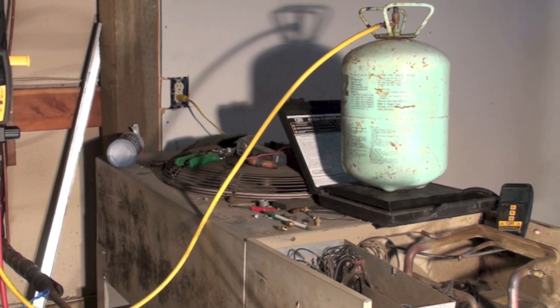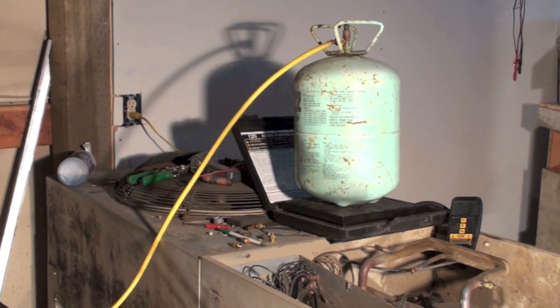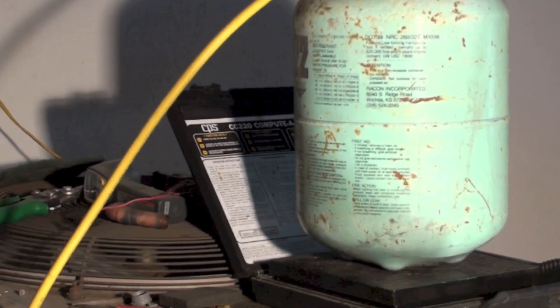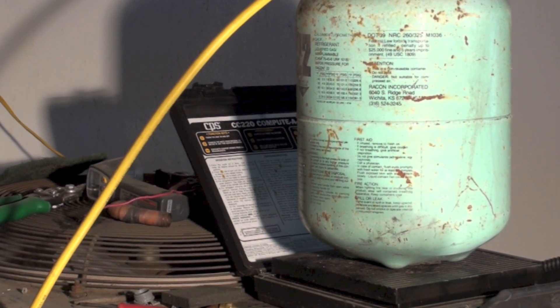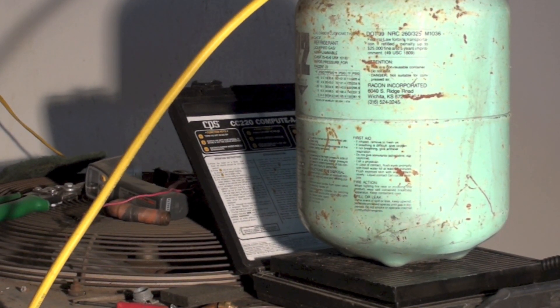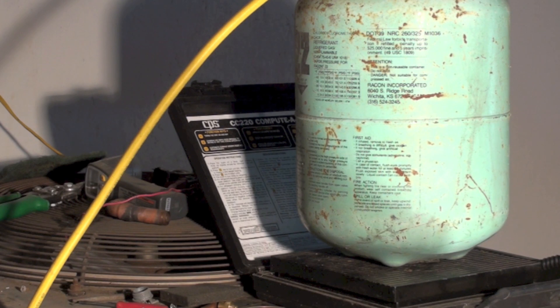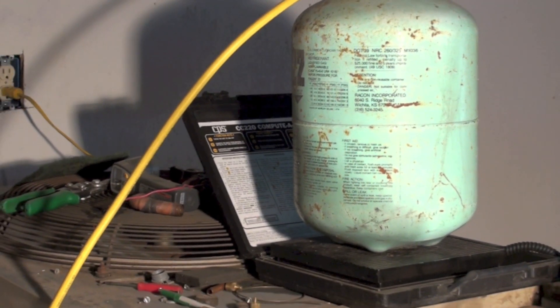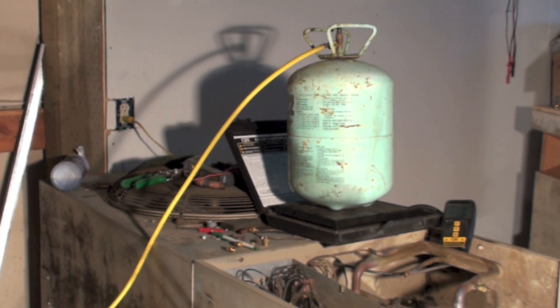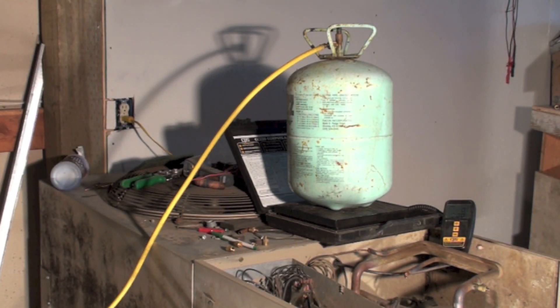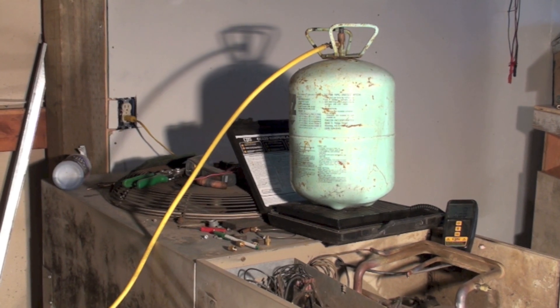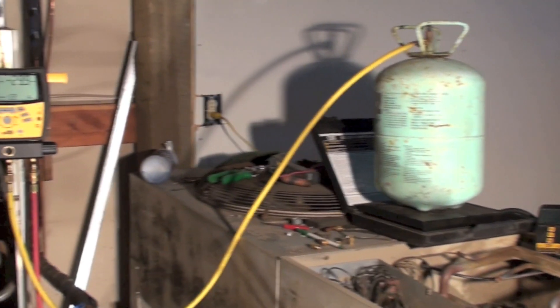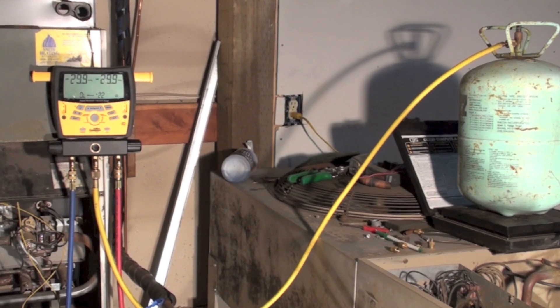Okay, if you look here, I've got the refrigerant cylinder right there. It's on a scale. I always have it on a scale. This is how I always do it. It just saves me trouble if there's questions later. It's on the scale, set to move gas out because it's upright, and you can see the yellow line goes over to the gauge set.